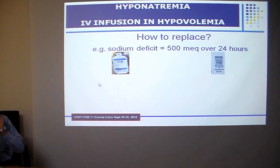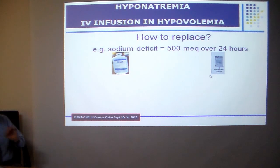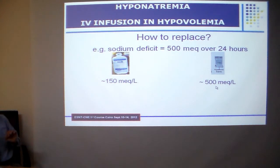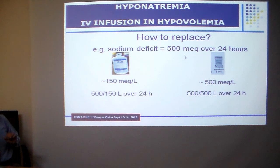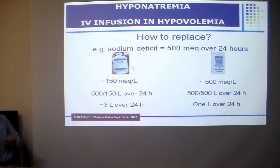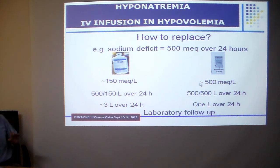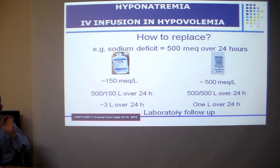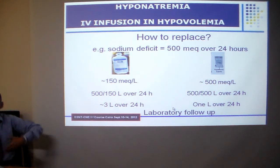Normal saline is the usual IV fluid used, containing about 150 mEq per litre, while hypertonic saline contains 500 mEq per litre. In the example above, you would give the patient 3 litres of normal saline or 1 litre of hypertonic saline. Remember this calculation is only a guide for initial treatment — you must strictly monitor serum sodium every four hours, as levels may rise faster than expected.